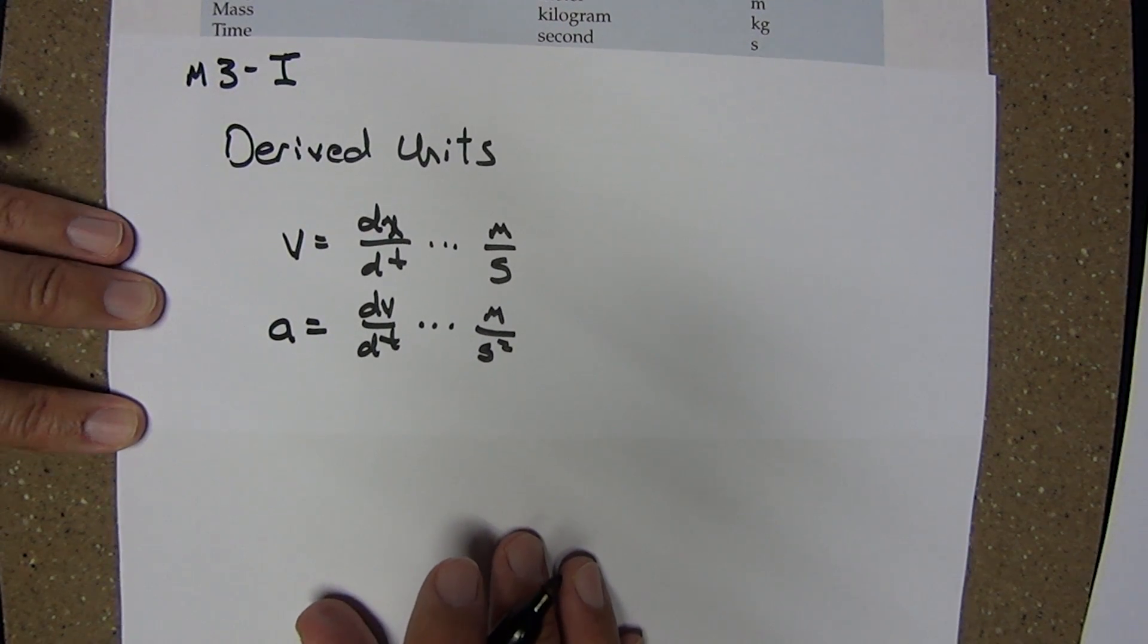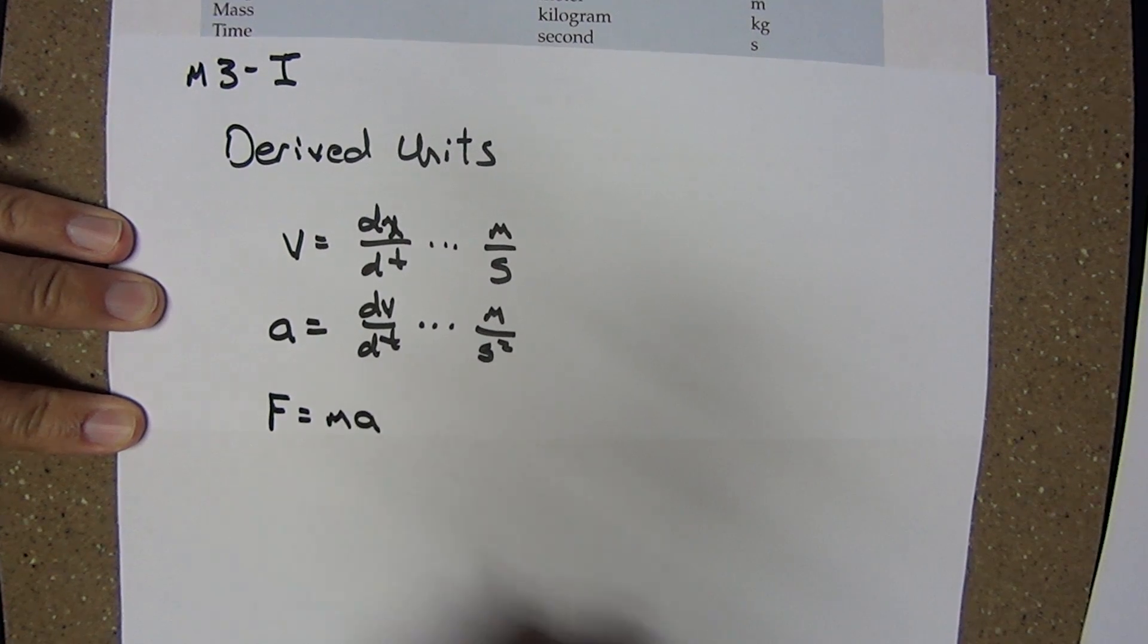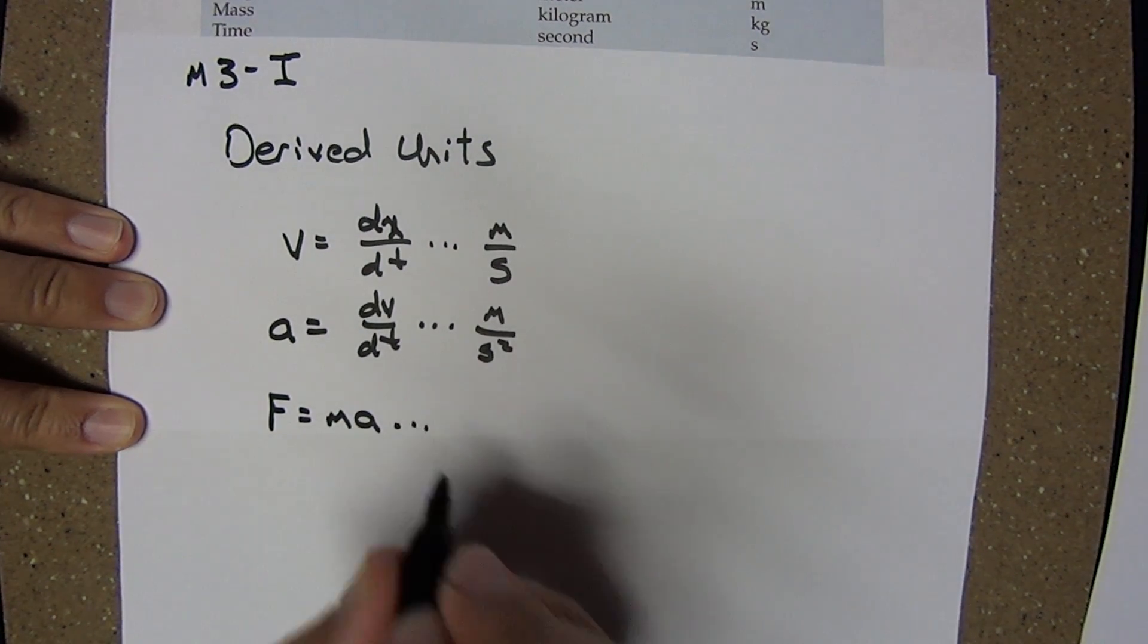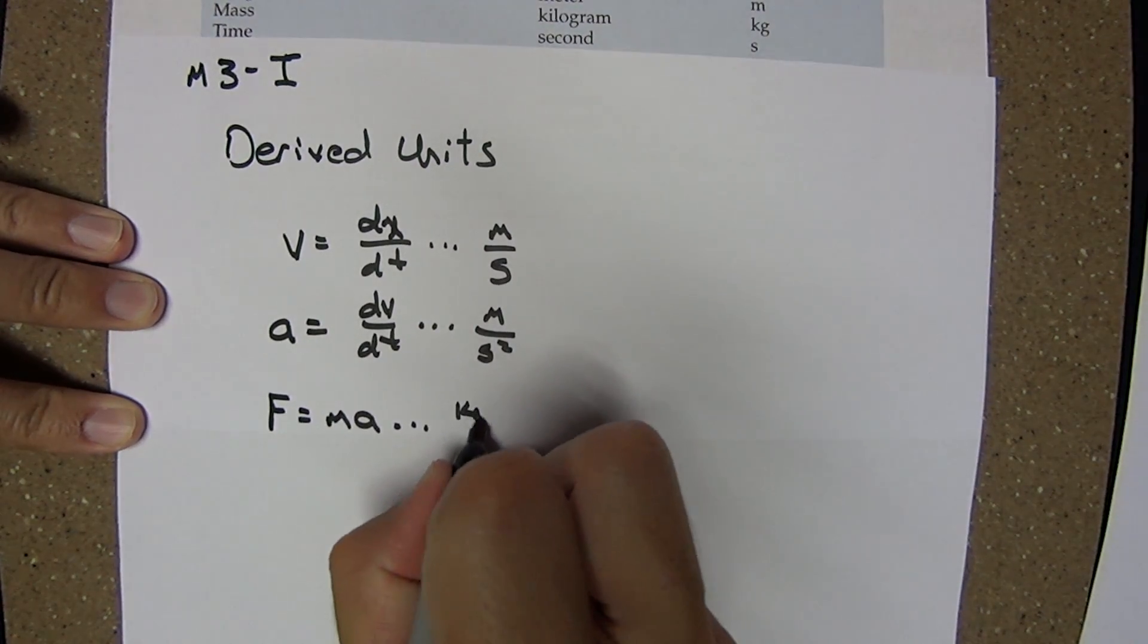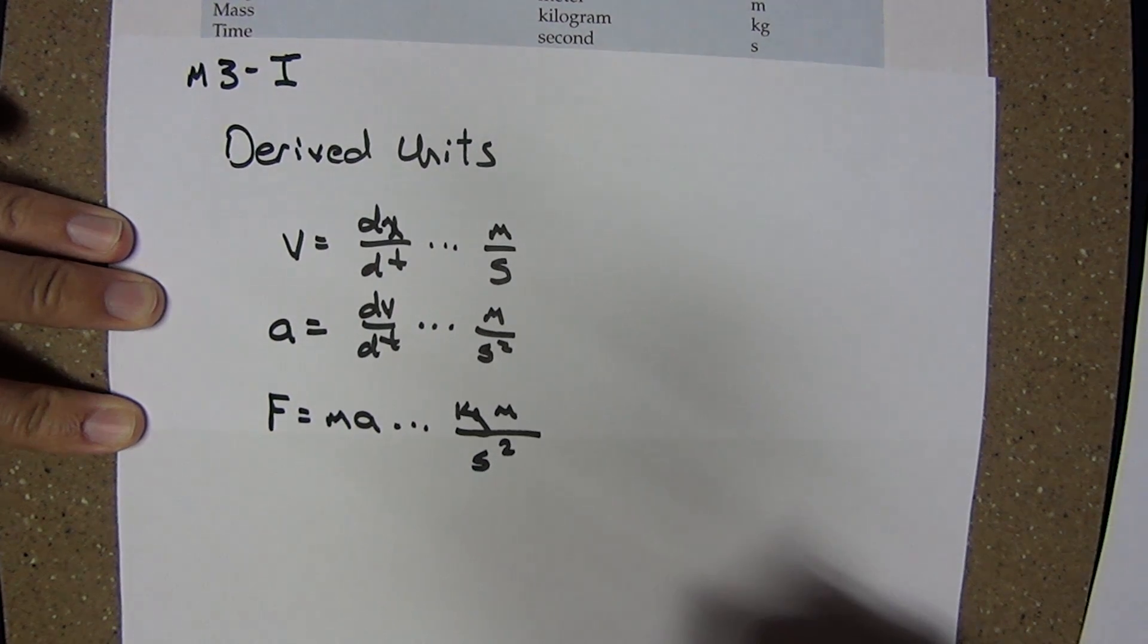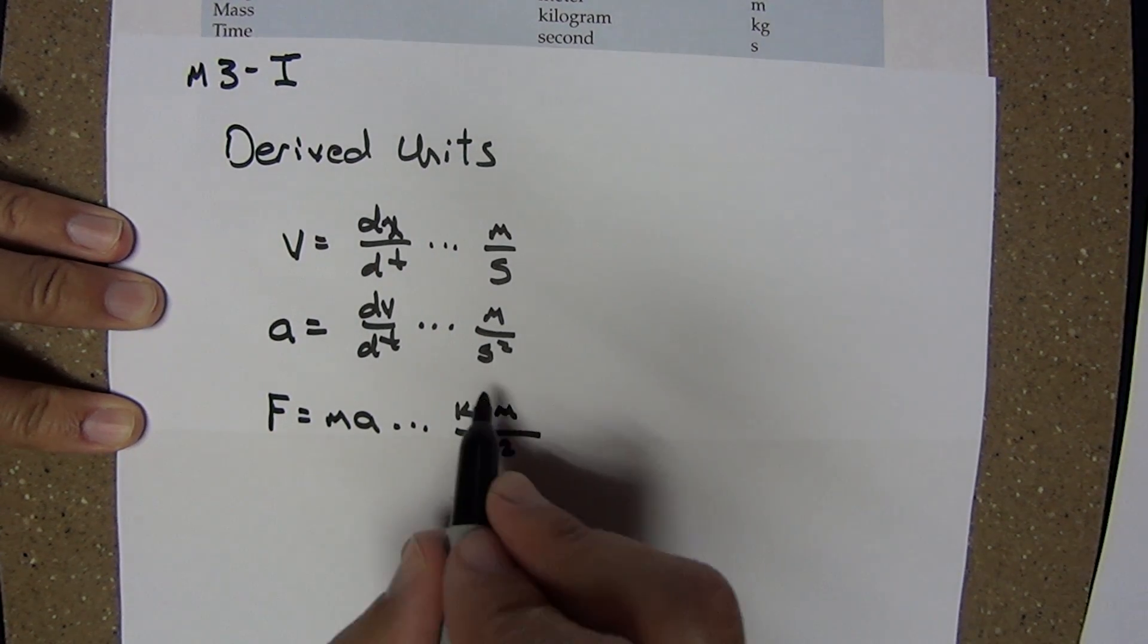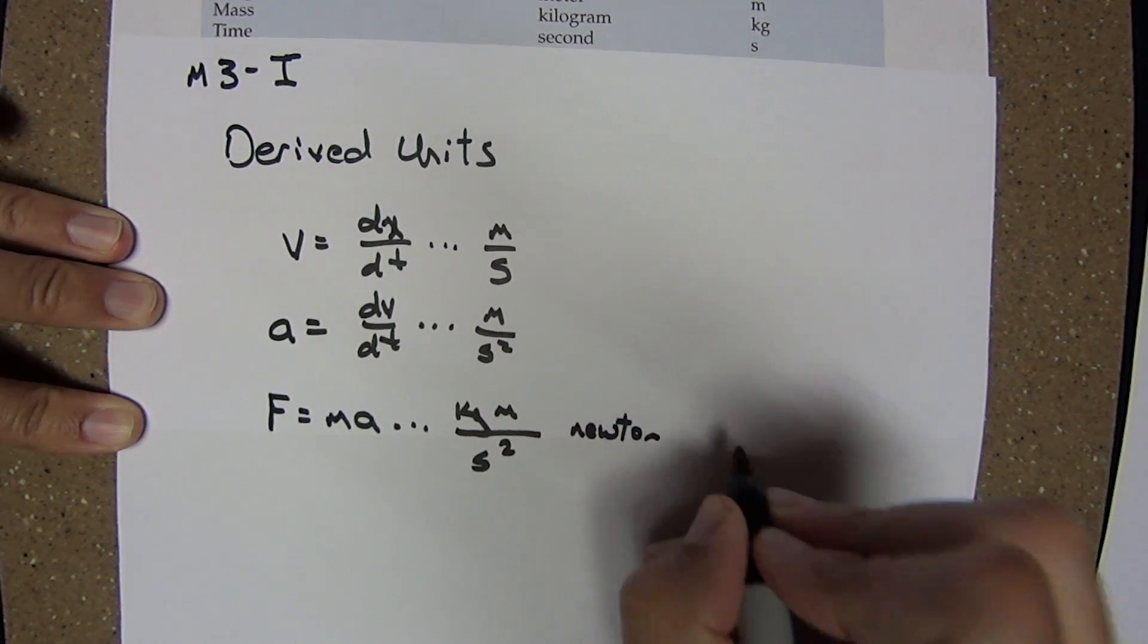From Newton's second law of motion, force is mass times acceleration. Mass in kilograms, acceleration in meters per second squared. This combination of units we call a newton.